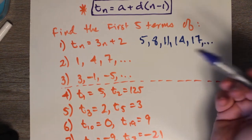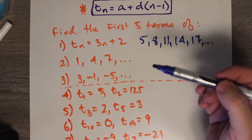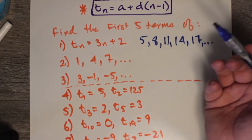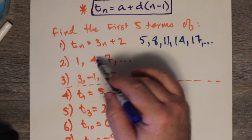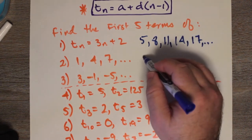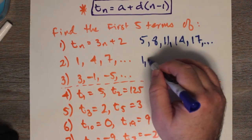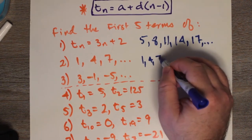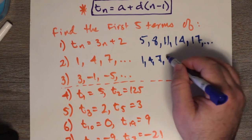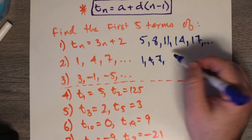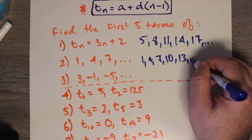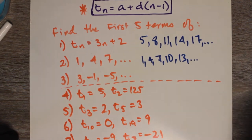For the sequence 1, 4, 7 — notice you're just adding 3 to the previous term each time. So 1, 4, 7, then 7 plus 3 is 10, and then 13, and so on.